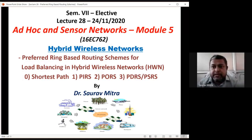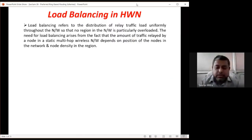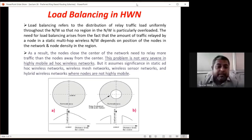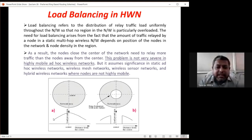We start lecture number 28 today. We finished the last session with a very typical kind of routing found in case of hybrid wireless networks, called load balancing in hybrid wireless networks. We had seen a diagram where generally towards the center of any circular kind of network, this gray area, the central position is heavily loaded, while data traffic towards the periphery is comparatively lesser.